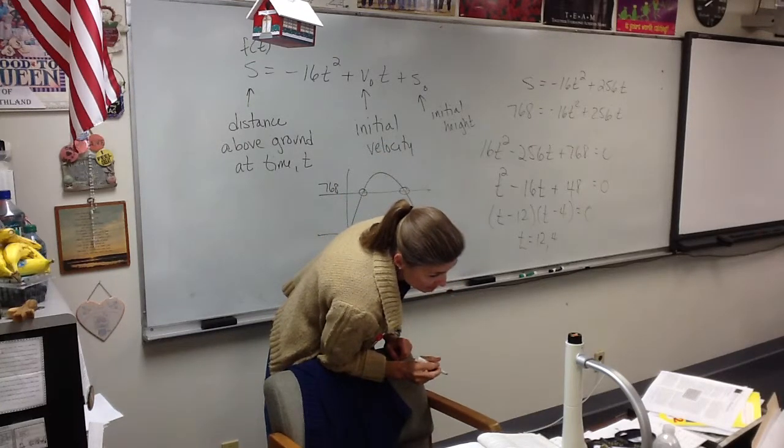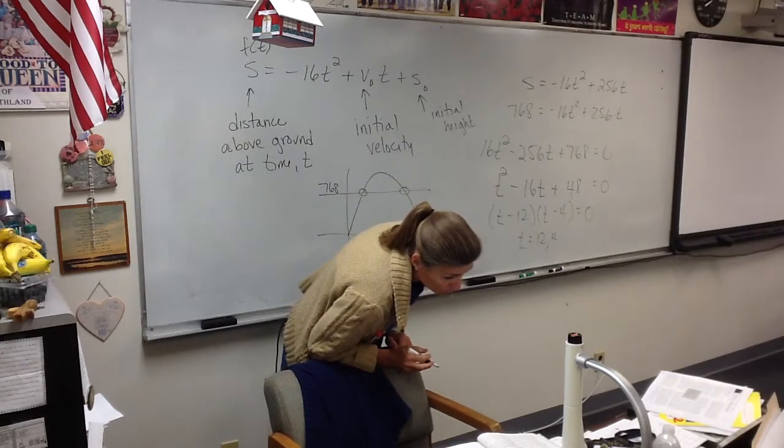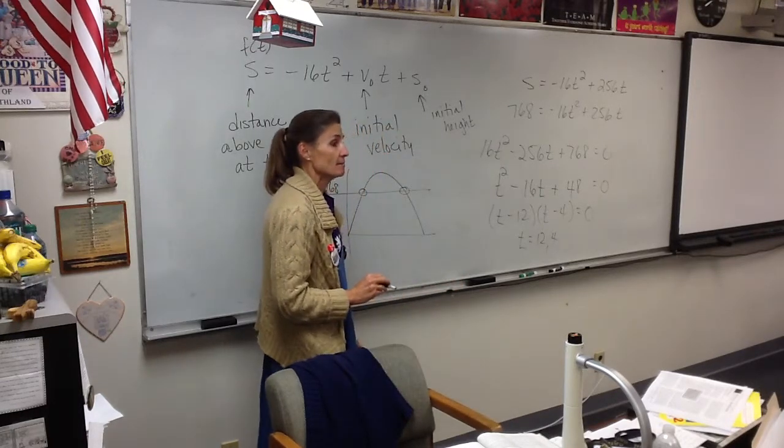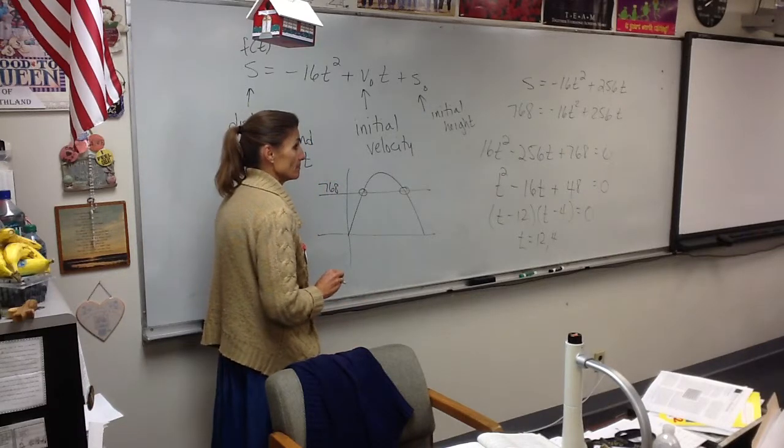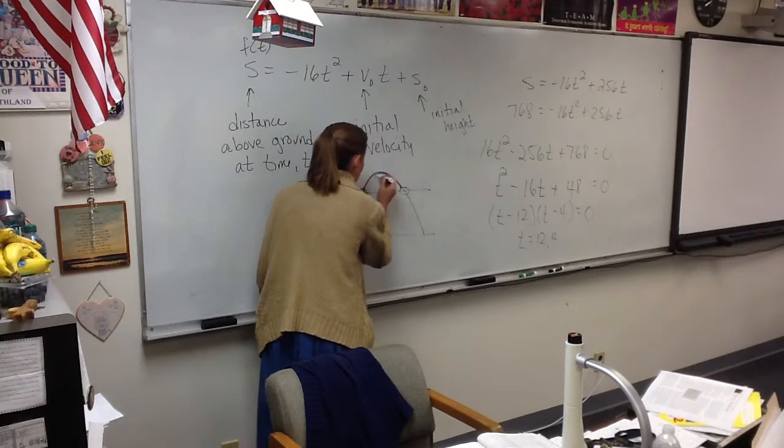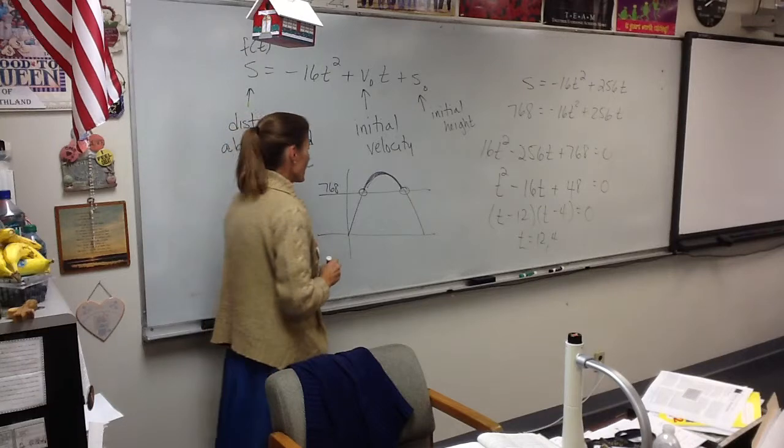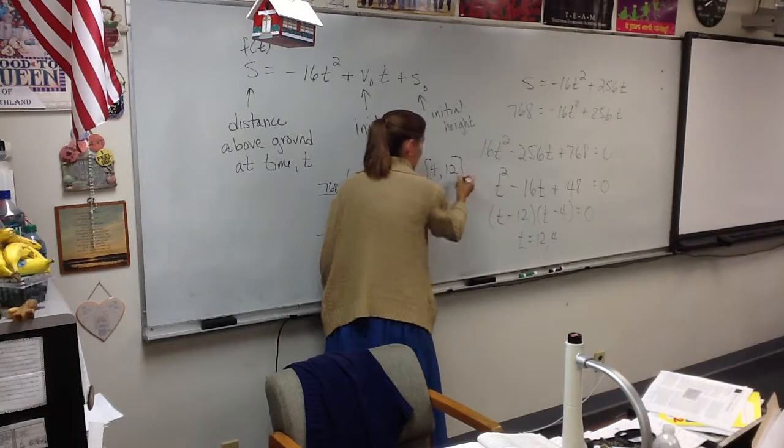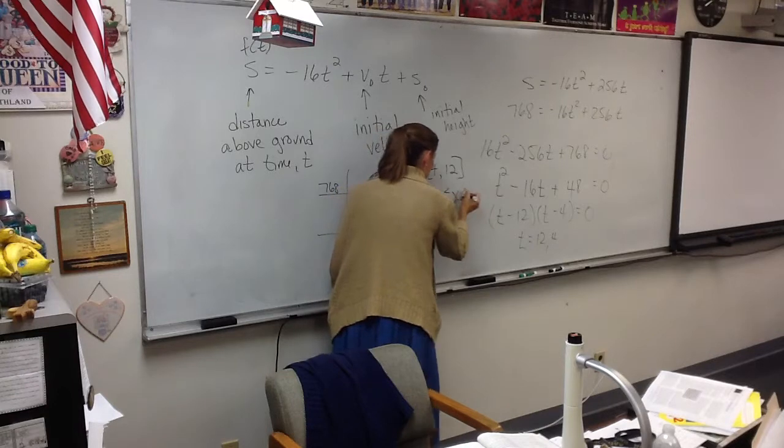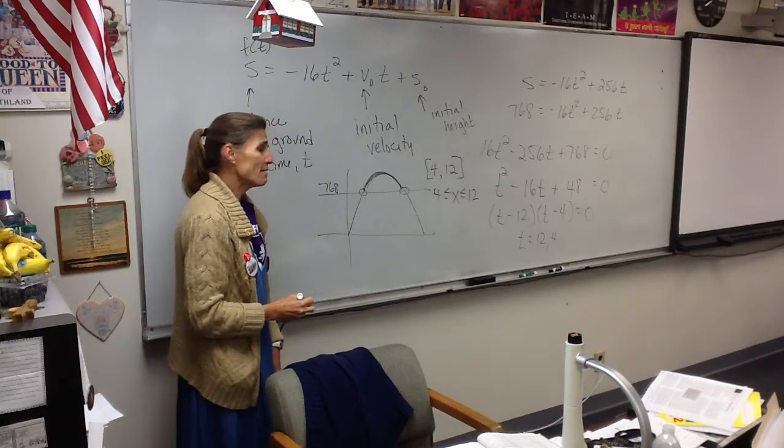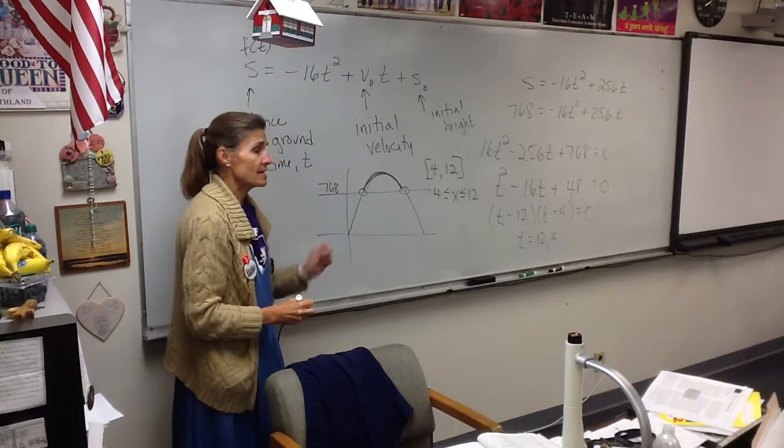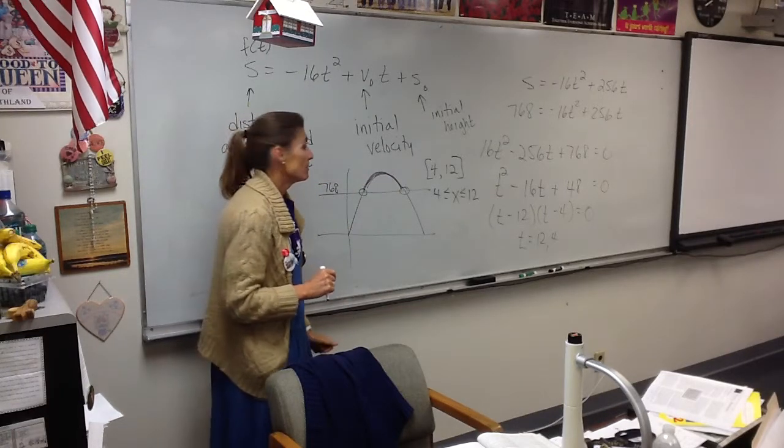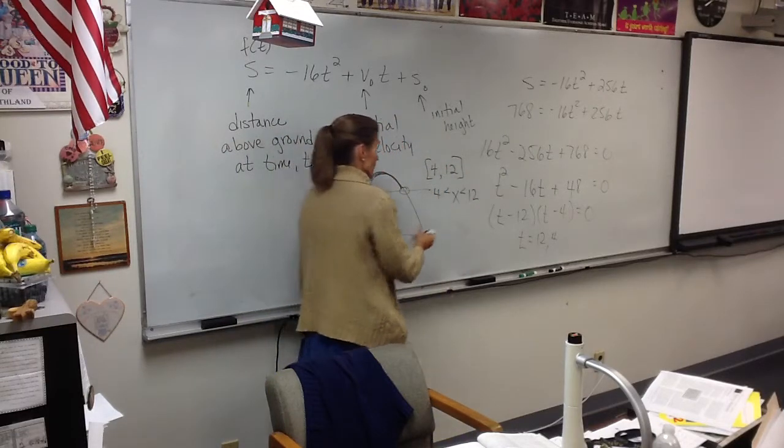Part B. When will the projectile's height above ground be at least 768? Isn't this where it's at least 768? So what would I say the answer to that one is? Between 4 and 12. What if it said more than 768? What would change if it said more than? These would be open, right? Those would be open intervals.